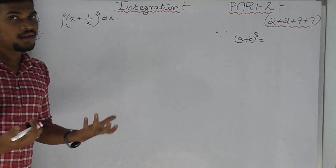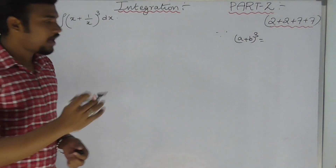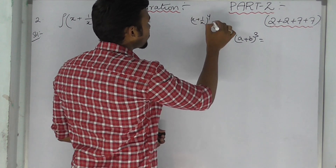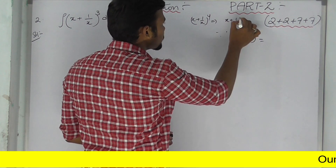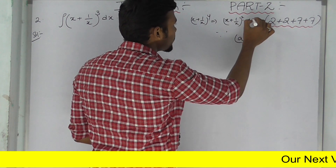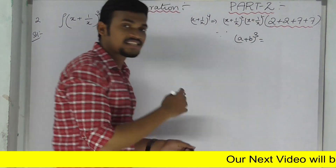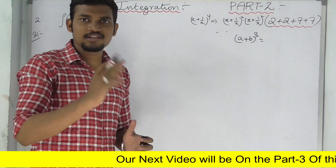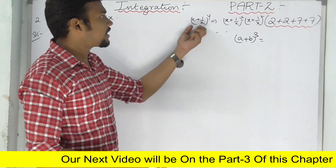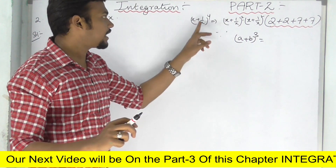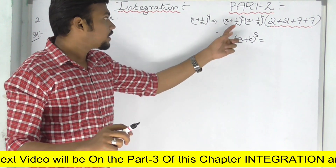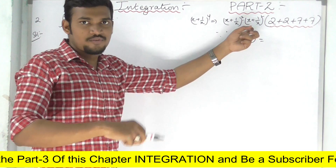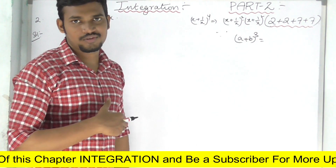For example, (x + 1/x) whole to the power 4. We write this as (x + 1/x)² times (x + 1/x)². Using the identity A² + B² + 2AB, we expand each square bracket.